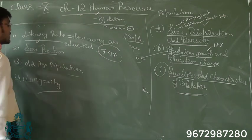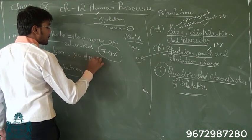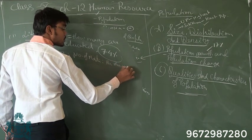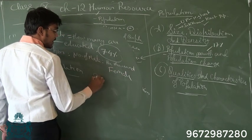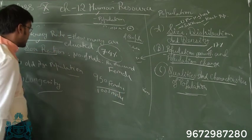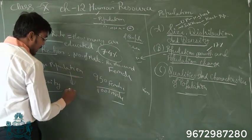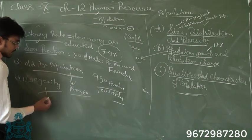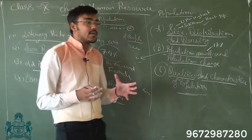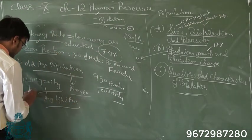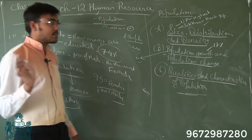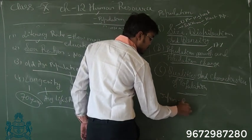Sex ratio tells us the number of females per thousand males. In India, there are 950 females for every 1000 males. Old age population refers to how many people are above 60 years in the country. Longevity means the average lifespan of people — in India, longevity is 70 years, whereas for Japan it is 87 years.